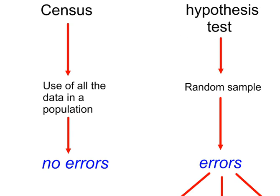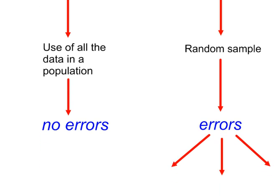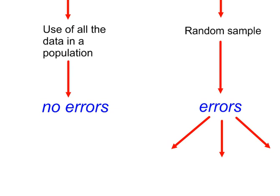When considering errors from a hypothesis test, one of three things can happen. Either the test conclusion is correct and there are no errors. If the test conclusion was to reject H0, then a Type I error could have been made. And if the test conclusion is to accept H0, then a Type II error could have been made.